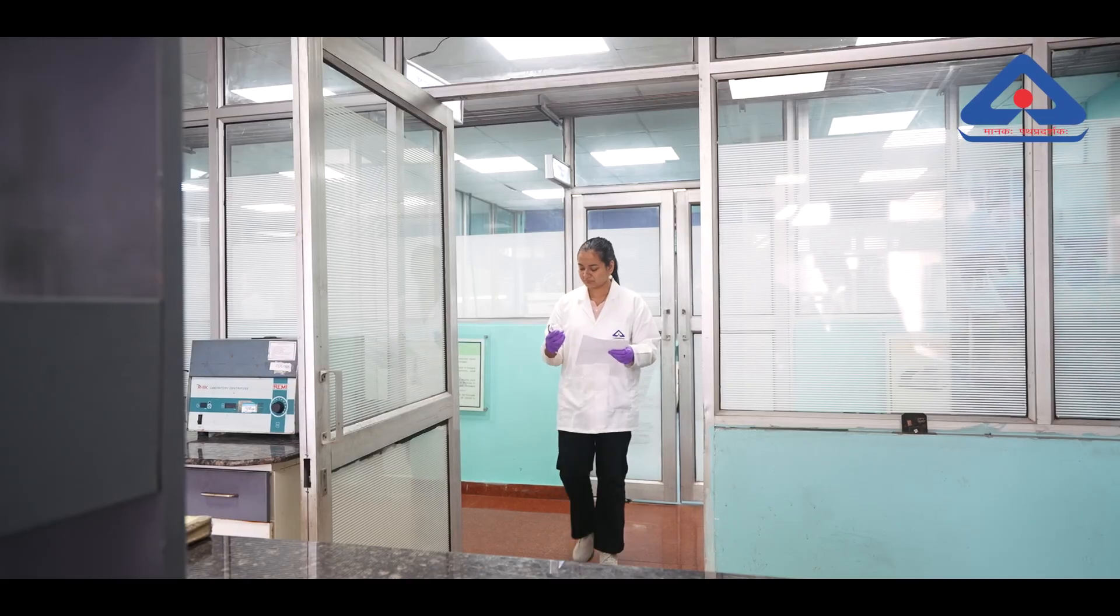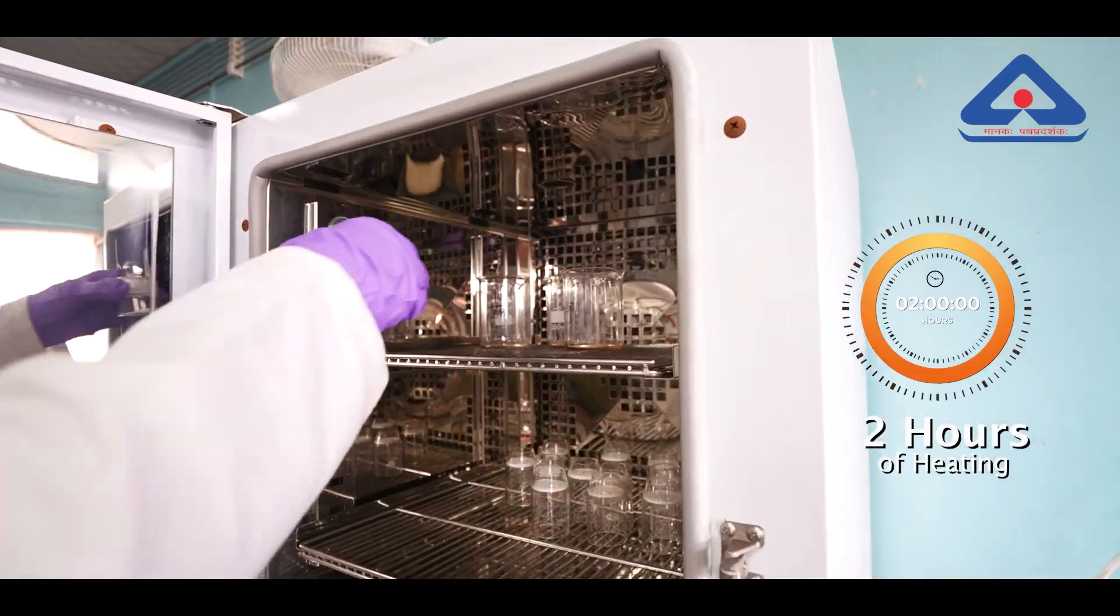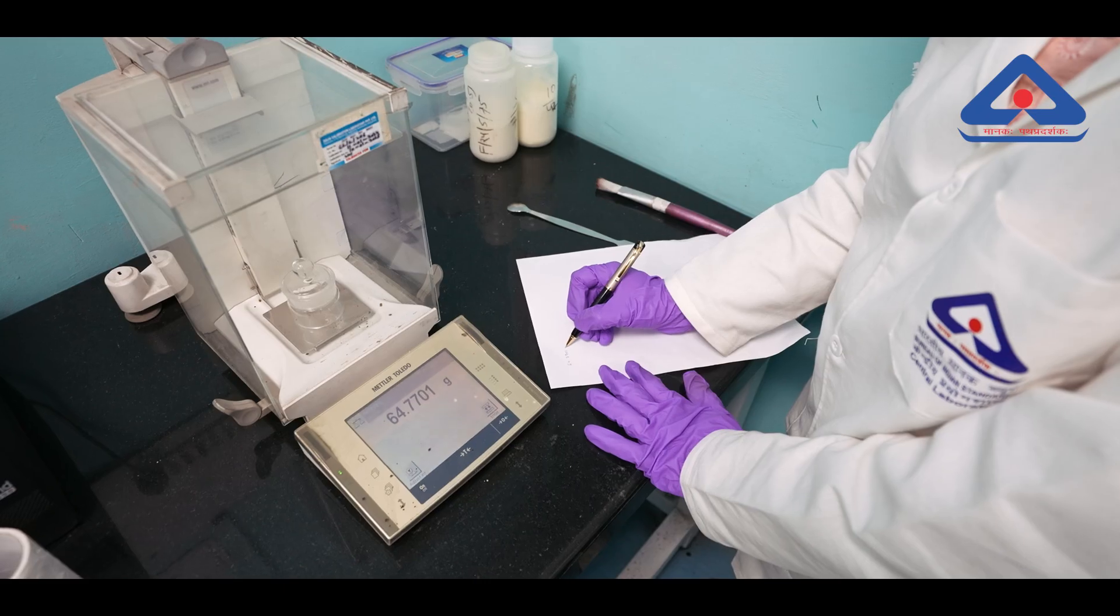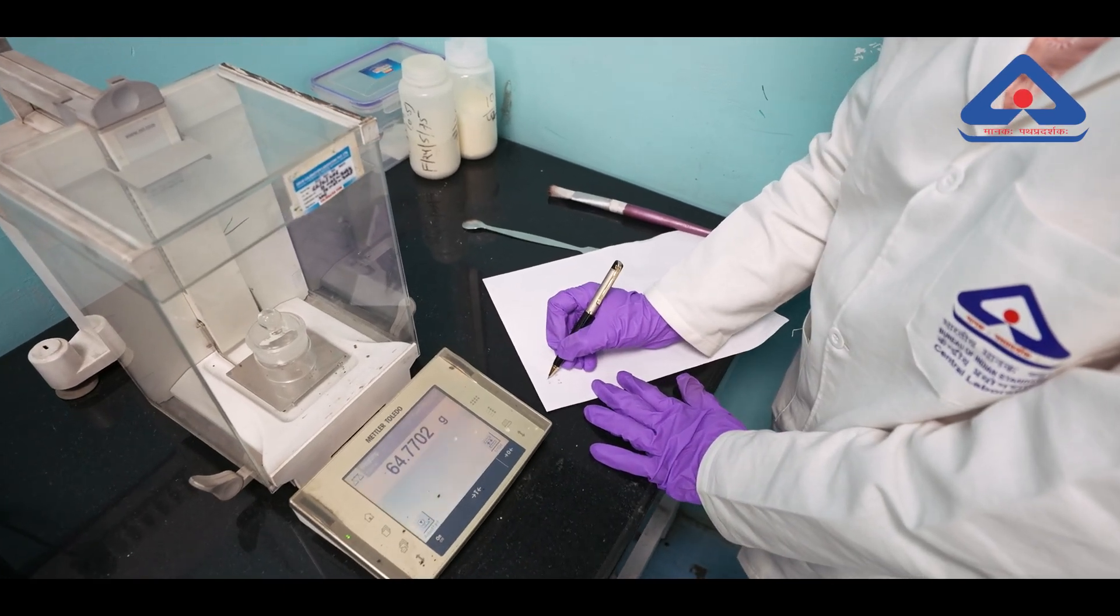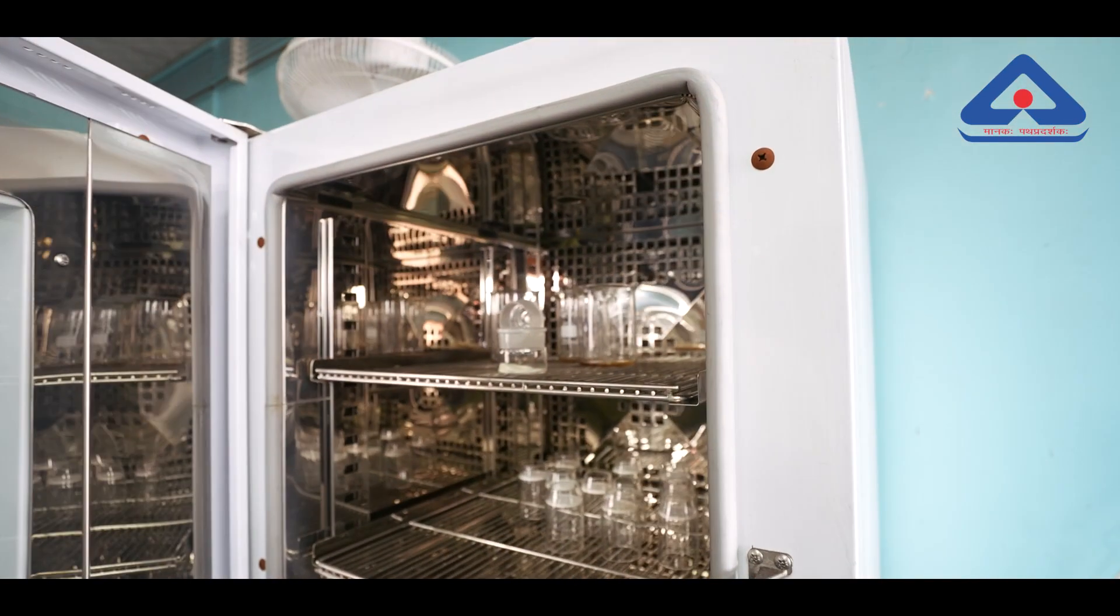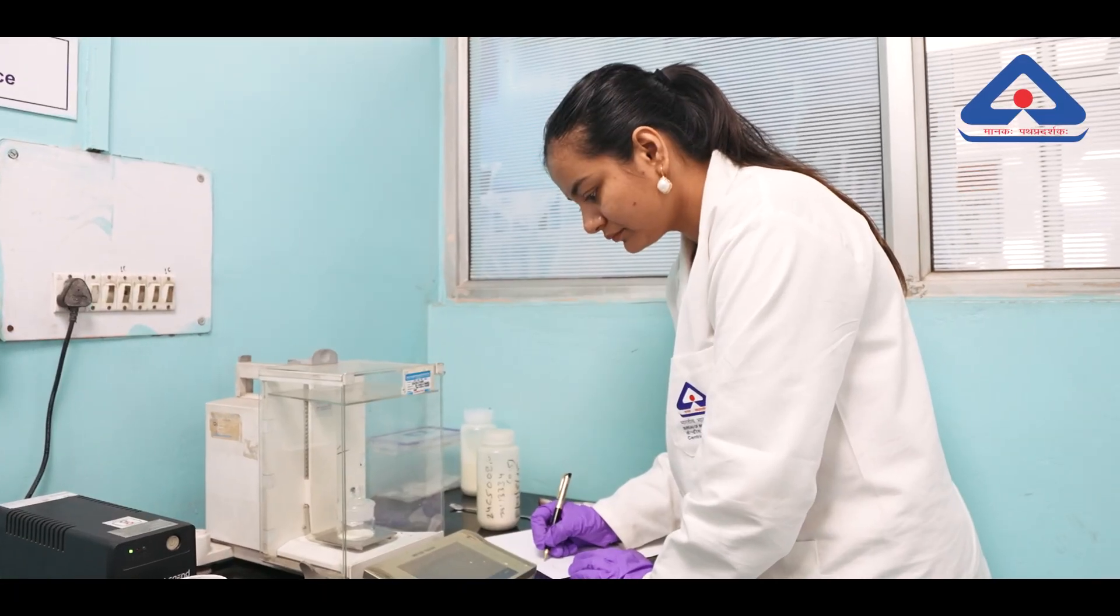Sample is dried in an oven at 102 degrees Celsius. The initial weight of the sample is taken and after drying final weight is taken. The difference in mass tells about the moisture in a sample. Moisture content checks water level which must be low to keep the powder stable over time.